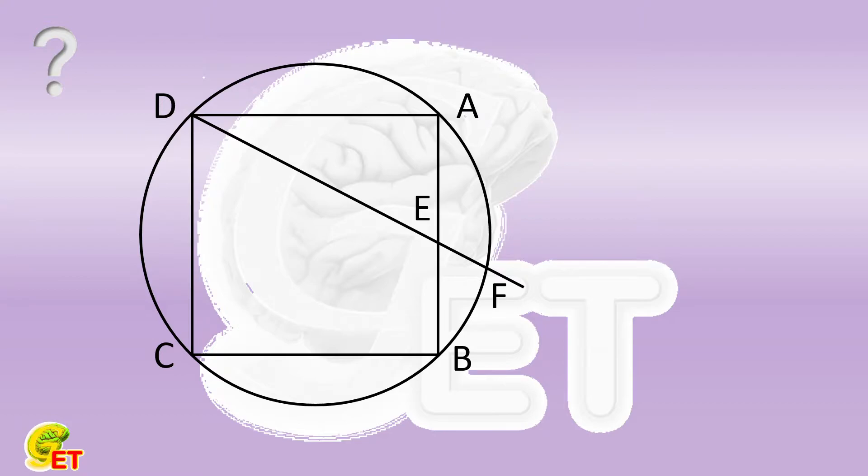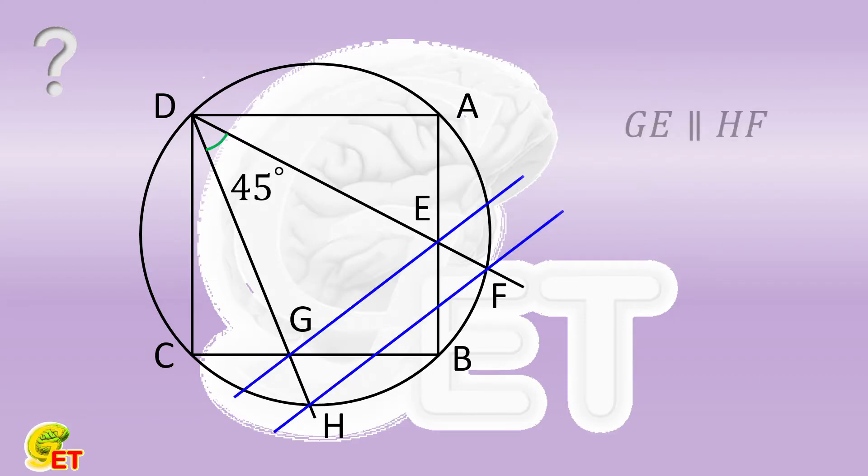DG intersects the side BC at point G and intersects the circumscribed circle at point H. Angle FDH is equal to 45 degrees. Would you like to prove that GE is parallel to HF?